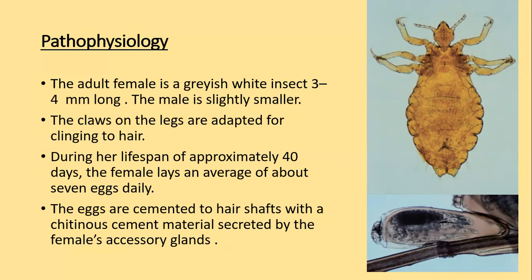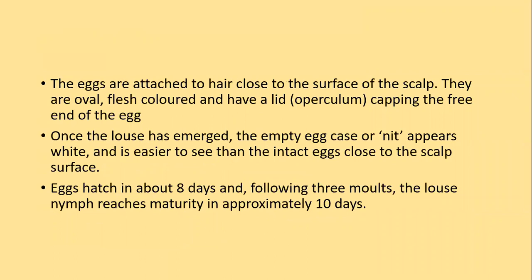During a lifespan of approximately 40 days, a female louse lays about seven eggs daily. The eggs are cemented to the hair shaft with a chitinous cement material secreted by the female accessory glands. These are nits with an operculum attached to the hair shaft. Eggs are attached close to the surface of the scalp — they are oval, flesh-colored, and have a lid operculum at the free end.